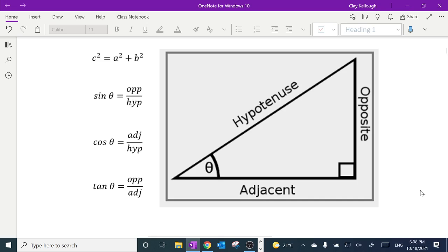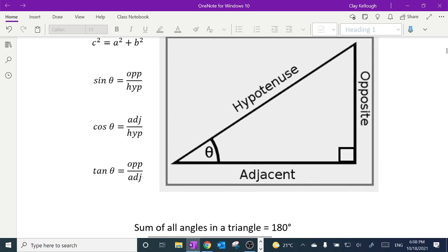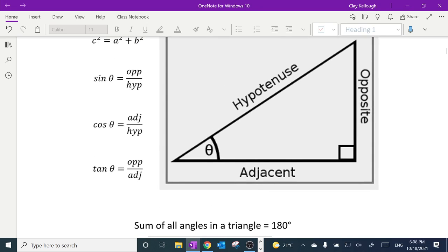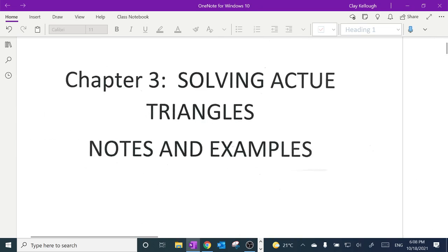And there's one other fact about triangles that you maybe remember. And this is all triangles, not just right triangles. If you add up all their angles, you get 180 degrees. This is something that popped up in Chapter 2. So all right, we're ready to go, Chapter 3.